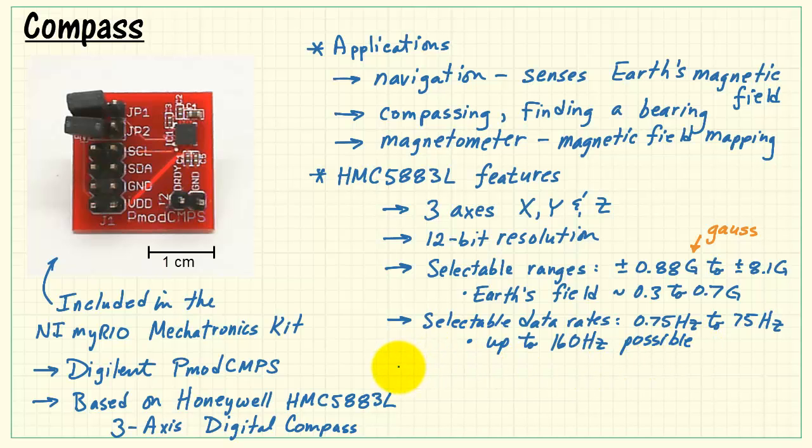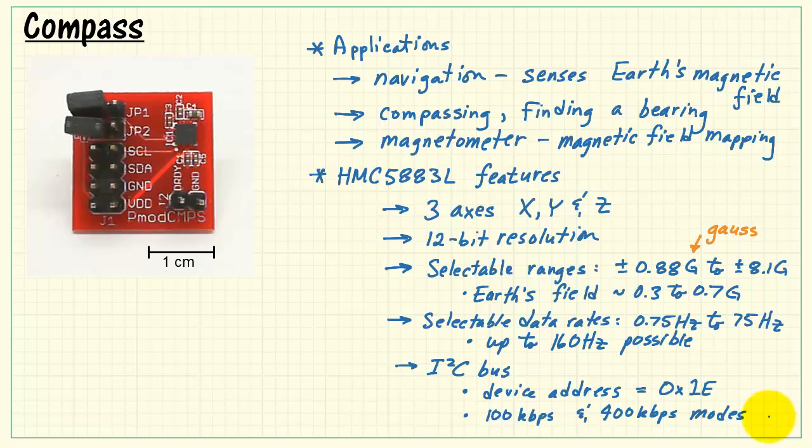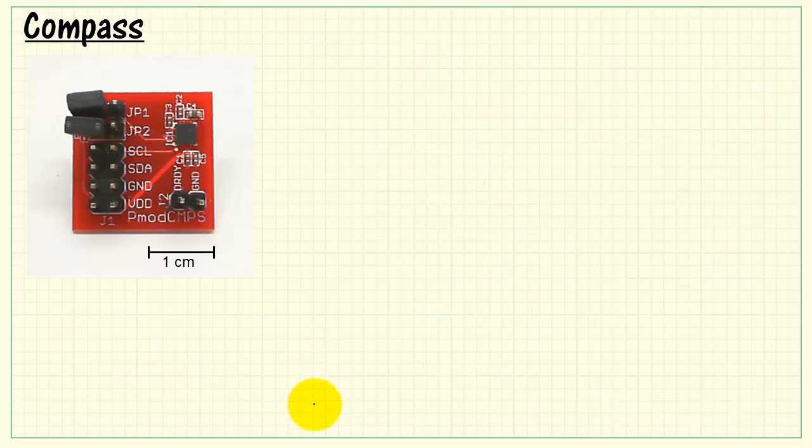Selectable data rates anywhere from 0.75 Hertz up to 75 Hertz and even 160 Hertz with special treatment. This compass communicates using the I2C serial bus at device address hexadecimal 1E using either standard or fast modes. It includes a data ready output pin and is powered between 2.16 and 3.6 volts.